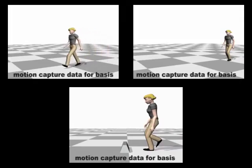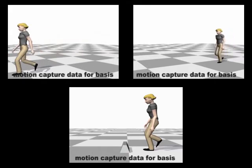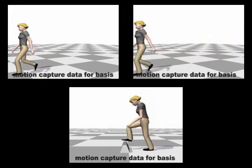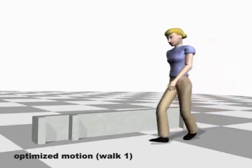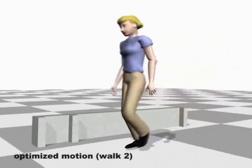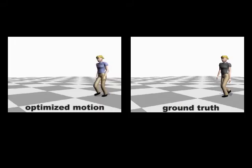A basis consisting of seven straight walks and one walk over an obstacle can be used to generate many different walks. Three walks with different step lengths. A comparison with a motion-capture sequence of an exaggerated walk.